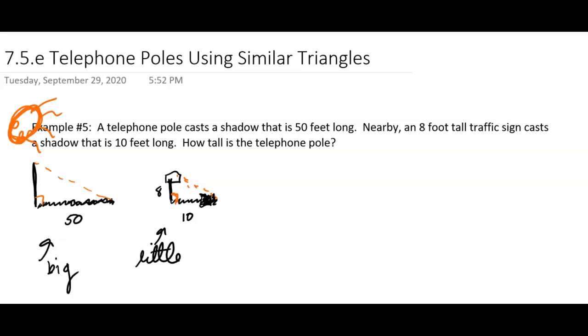So it's a lot easier to measure the shadow on the ground than it is to climb up that telephone pole with a tape measure and figure out how tall that telephone pole is. So we're trying to figure out X right here, we're trying to figure out how tall that telephone pole is, and we're going to use similar triangles to do that.